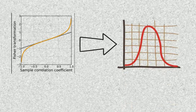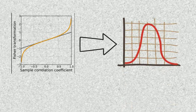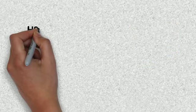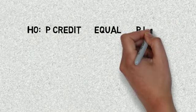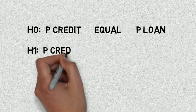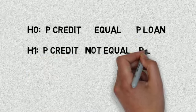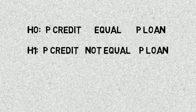With the normally distributed data, we can apply the hypothesis testing. Then, we can decide if the probability of getting a loan is equal or different from getting a credit, using age and income as predictors.